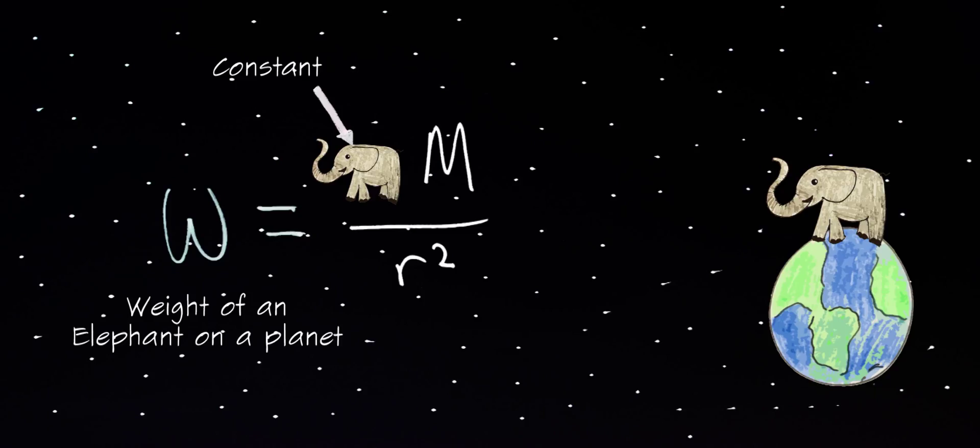which means that whether the elephant is on Earth, the moon, or just floating in space, it would still have the same mass. Capital M on the other hand represents the mass of the Earth and r is the distance between the elephant and the center of the Earth.